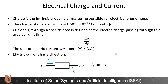One ampere is equal to one Coulomb divided by one second. Electrical current has a direction. Due to convention, the direction of the electrical current is opposite to the flow of electrons. Here we have current I1 flowing from terminal A to terminal B, and here we have current I2 flowing from terminal B to terminal A. Accordingly, I1 is equal to minus I2.